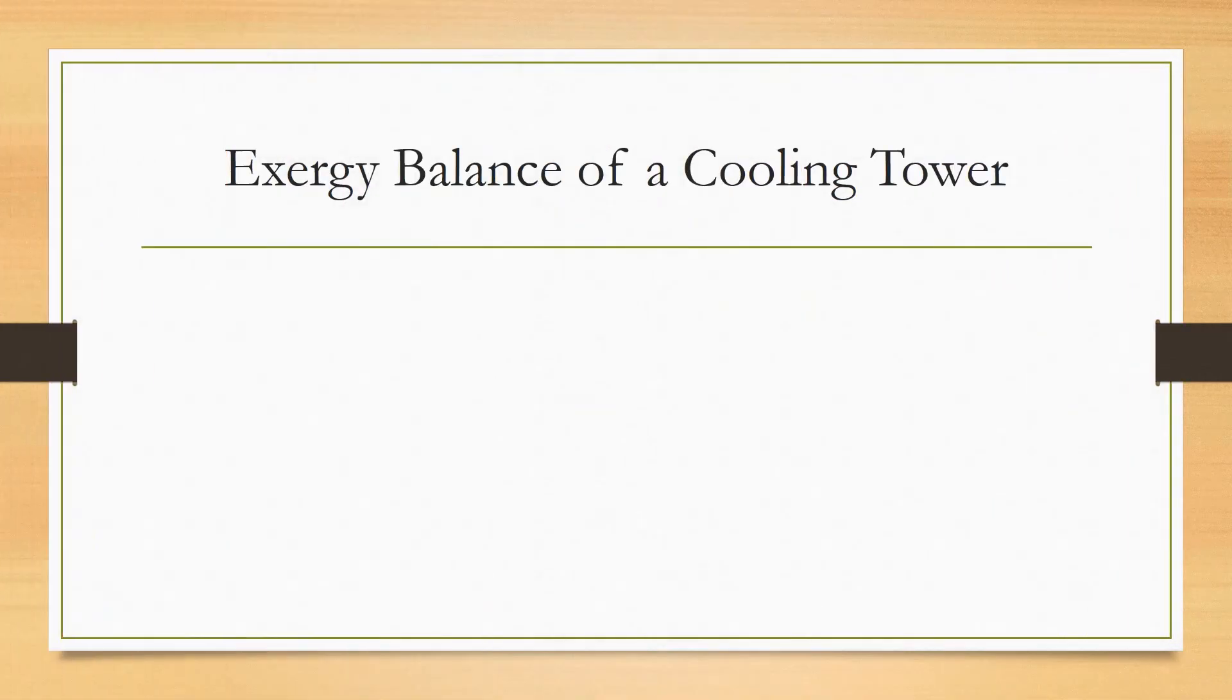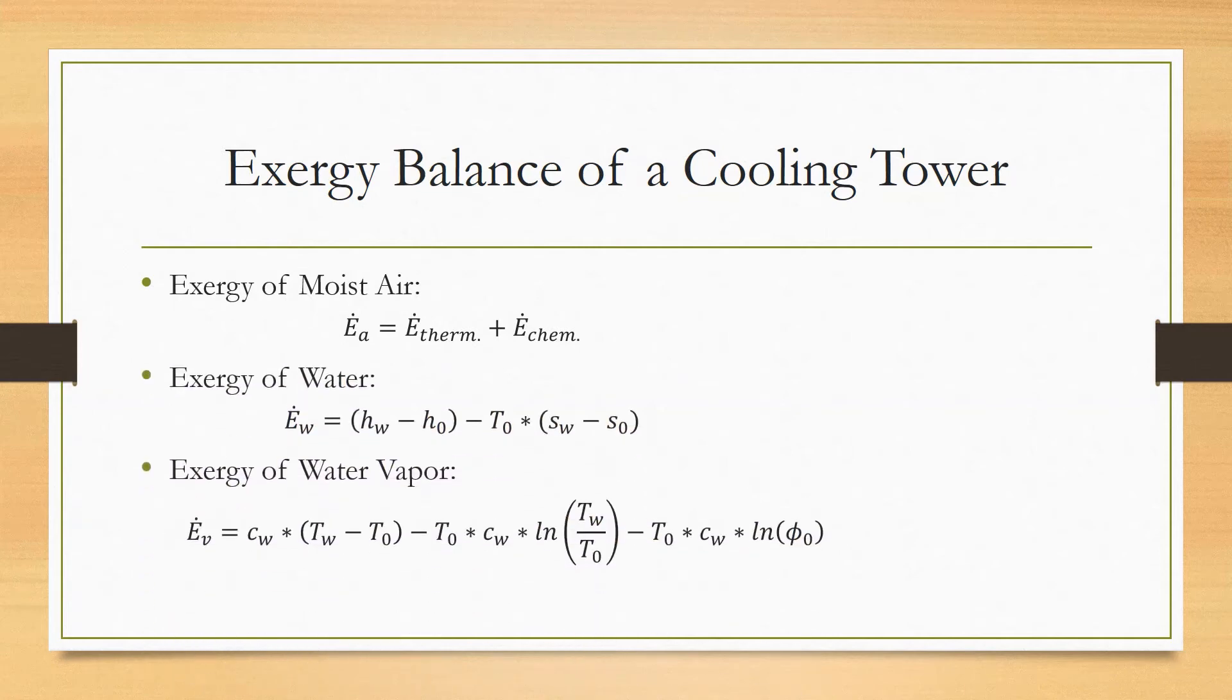Now let's examine the exergy balance of a cooling tower. We know the exergy of moist air will consist of thermal exergy plus chemical exergy. We can also determine the exergy of water and water vapor. Therefore, for our exergy balance on the cooling tower, the exergy of water will equal the exergy of water vapor plus the exergy of air.